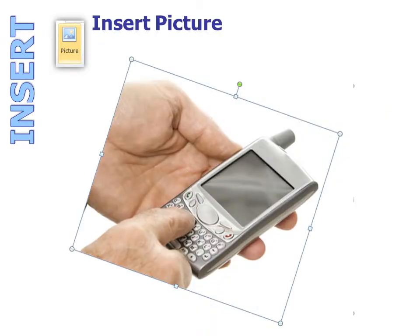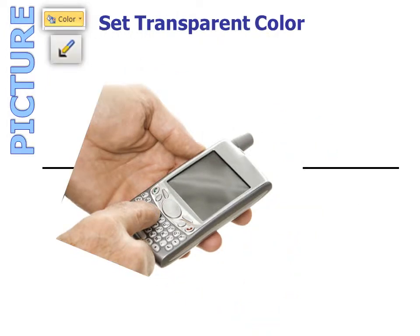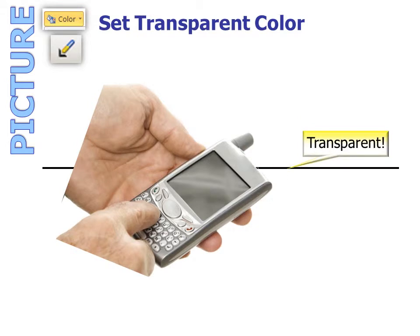First you want to insert your picture, and I tilted it so that there would be something to wrap around — kind of an angle. Then make sure that you set transparent color, because as you can see it has a white background. Under color, you click Set Transparent Color into the white area and it becomes transparent, and now you can see the line behind it.